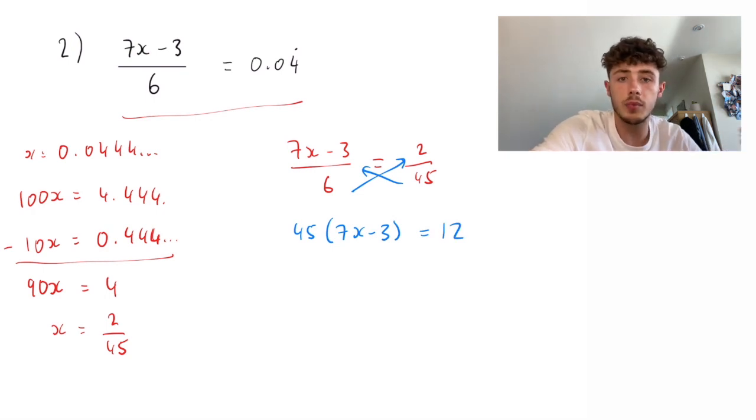We can divide both sides by 3 to make our numbers a bit smaller. So, 15, 7x minus 3 equals 4.